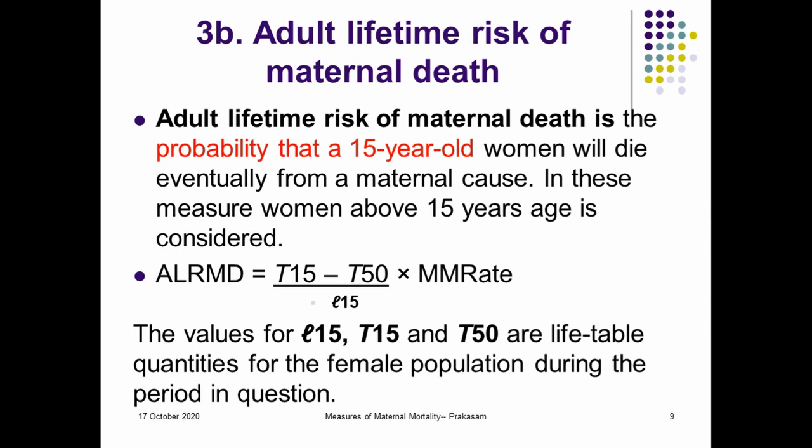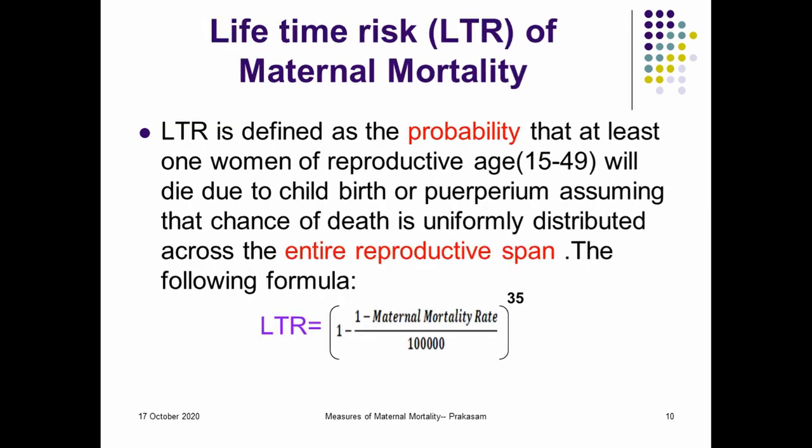T15 and T50 are life table functions which can be derived from female life tables. This adult lifetime risk mortality is derived from life table functions. Some other methods for calculating the lifetime risk will be discussed in the indirect methods of estimation of maternal mortality in the coming discussions.